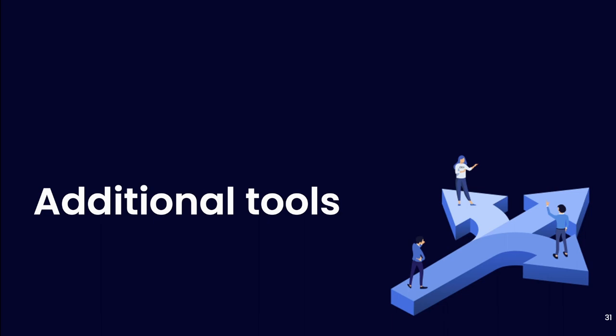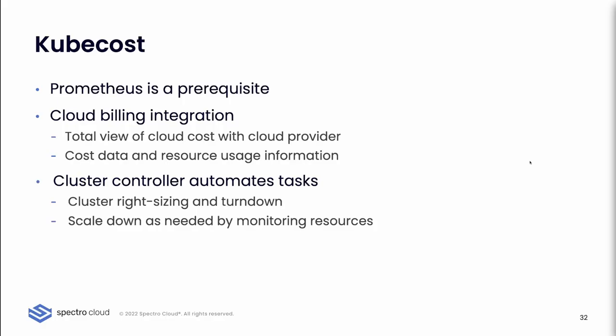Once you've implemented those infrastructure changes, you can use additional tools to monitor and optimize your bill. Kubecost is a software you install via Helm or a Kubernetes manifest within your cluster. It has Prometheus as a prerequisite and provides cloud billing and a complete view of your expenses across cloud providers. The tool not only displays cost data but correlates it with resource usage for precise cost management. It features a cluster controller that automates tasks like cluster rightsizing and turndown, and makes use of CRDs to extend Kubernetes native functionality for fine-grained control over cost allocation and reporting.